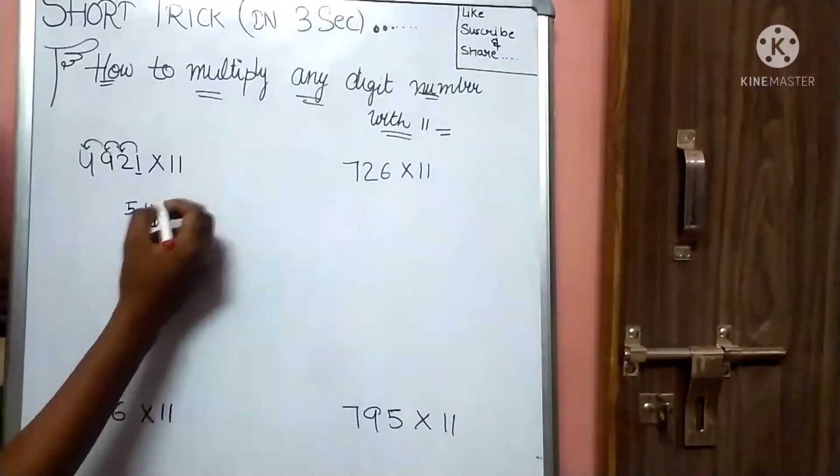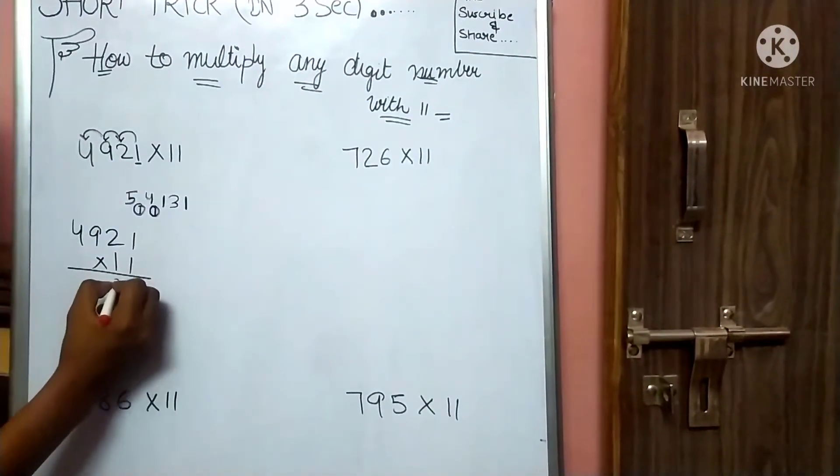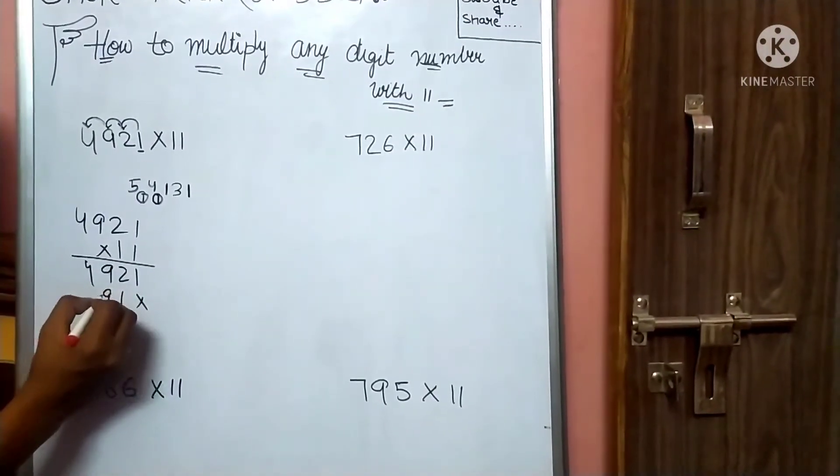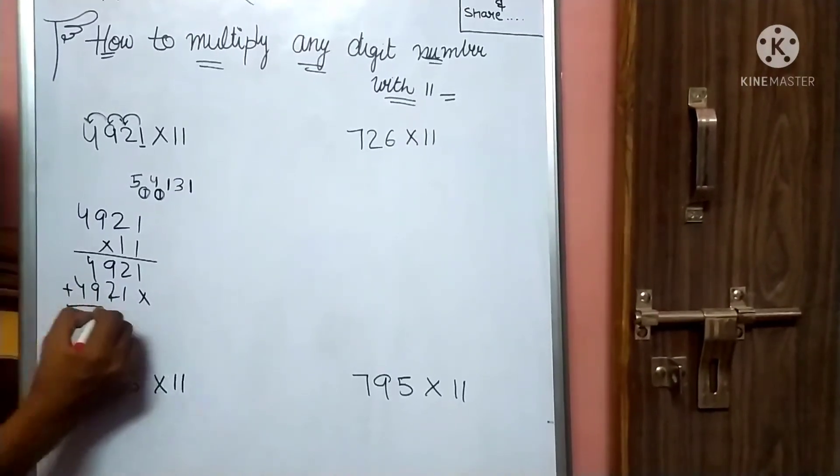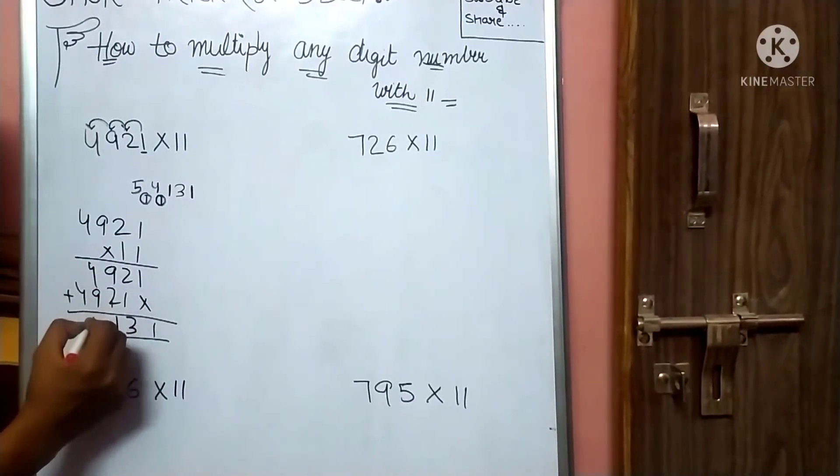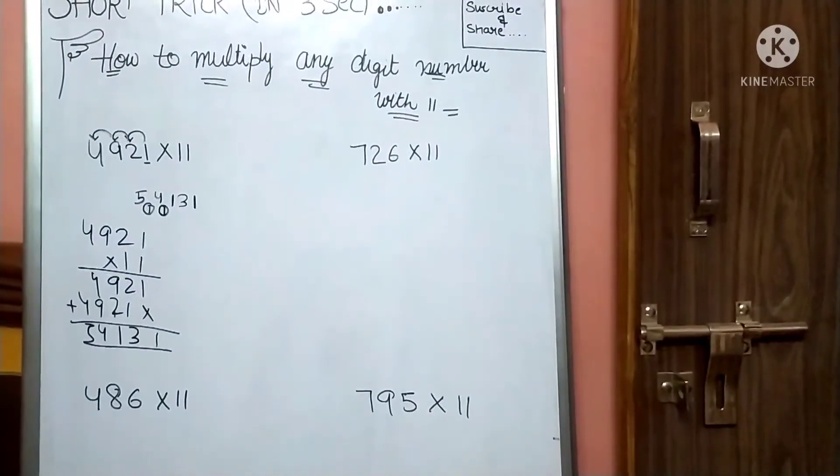Now I will verify this. I will multiply it normally, so it will be clear. 492 times 11. 2, 9, 11, 11. 2 times 1 equals 2. Same as it is. Here will come 2, 9. If we do this plus, we get 1, then 3, 1 carry, 14, then carry 5. What answer? 5, 4, 1, 3, 2.